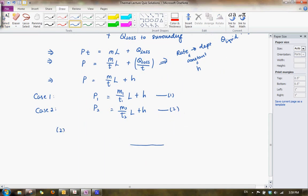And after that, what we simply can do is we can take two, subtract one. This will help me to get rid of H, and I will have P2 minus P1 equals to M2 over T2 minus M1 over T1. I'll take out L, and that becomes L is common. And re-expressing, what we will have is L is equals to P2 minus P1 over M2 over T2 minus M1 over T1.